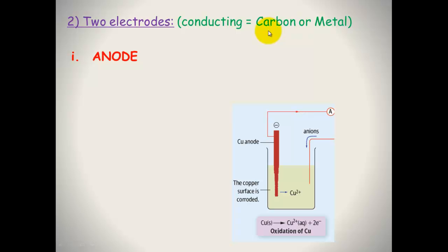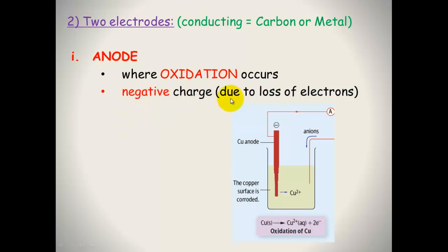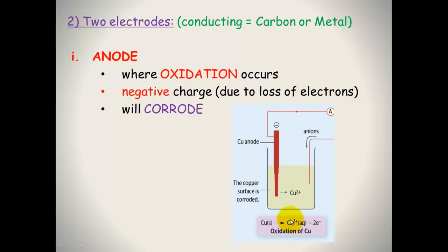The electrodes need to be conducting — generally made of a metal or carbon, since carbon conducts electricity. The anode is where oxidation occurs. Oxidation is the loss of electrons. You can see here that copper is undergoing oxidation, losing two electrons. This electrode has a negative charge due to the generation of electrons. The electrons move up out of the electrode, so this electrode will corrode — the copper solid turns into copper ions going into solution, and the two electrons travel up around the wire to the cathode.